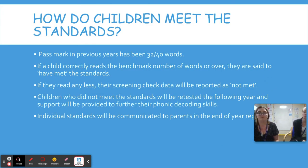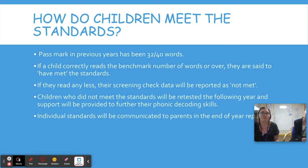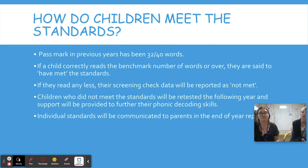The pass mark in previous years has been 32 out of 40. If children correctly meet that benchmark, they are said to have met the standard. If they don't, it will be reported as 'not met'. Children who don't meet the standard in Year One will retake the screening check in Year Two, and it helps Year Two teachers give them more support in reading and phonics.